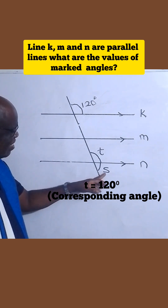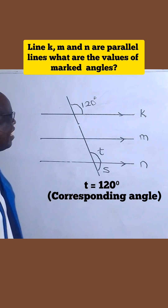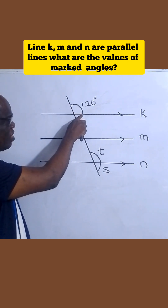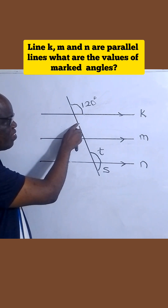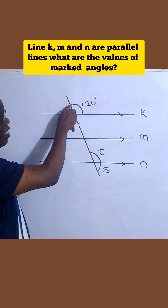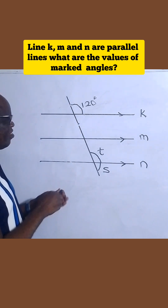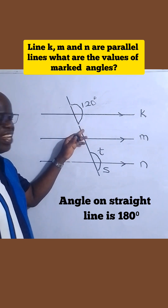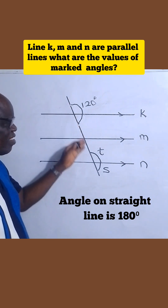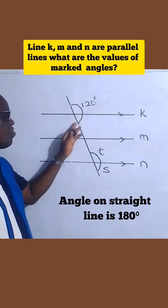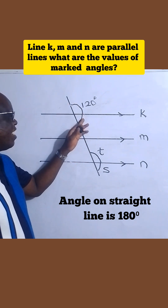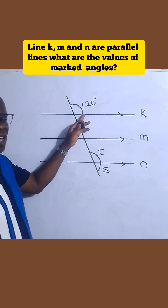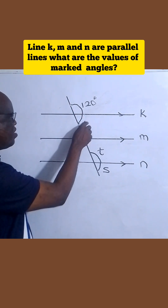Now let's find S. If from here to here is 120 degrees, what will be from here to this place? From here to this place is 180 degrees, and we call that an angle on a straight line. The angle on a straight line is 180 degrees, so this one will be 60 degrees — because from here to here is 120, the remaining part will be 60 degrees.